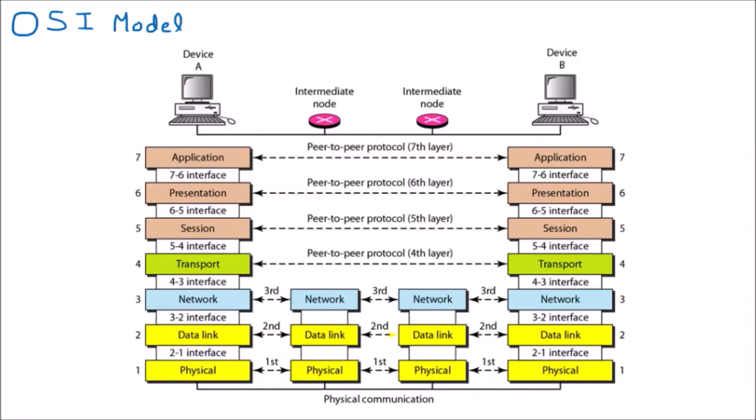We are looking at a diagram representing the OSI model. This diagram looks very confusing because we are finding seven layers, then three layers, then again three layers, and then seven layers again. So at first look this diagram appears very complex, but it is not actually complex.